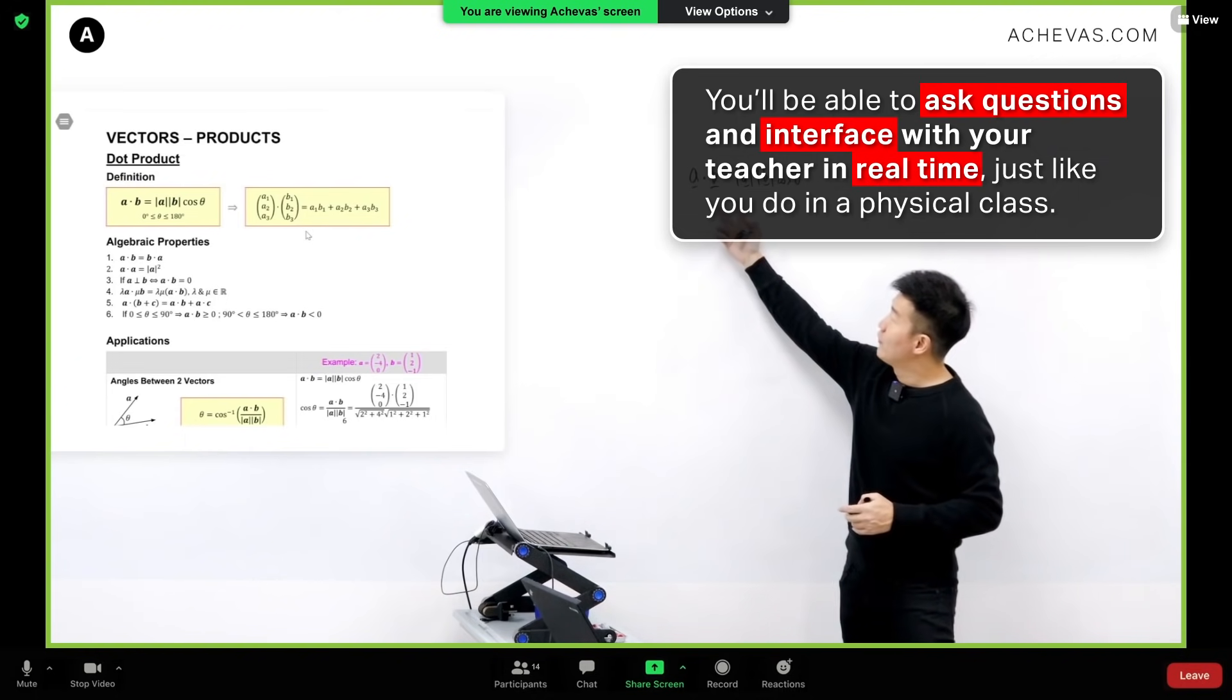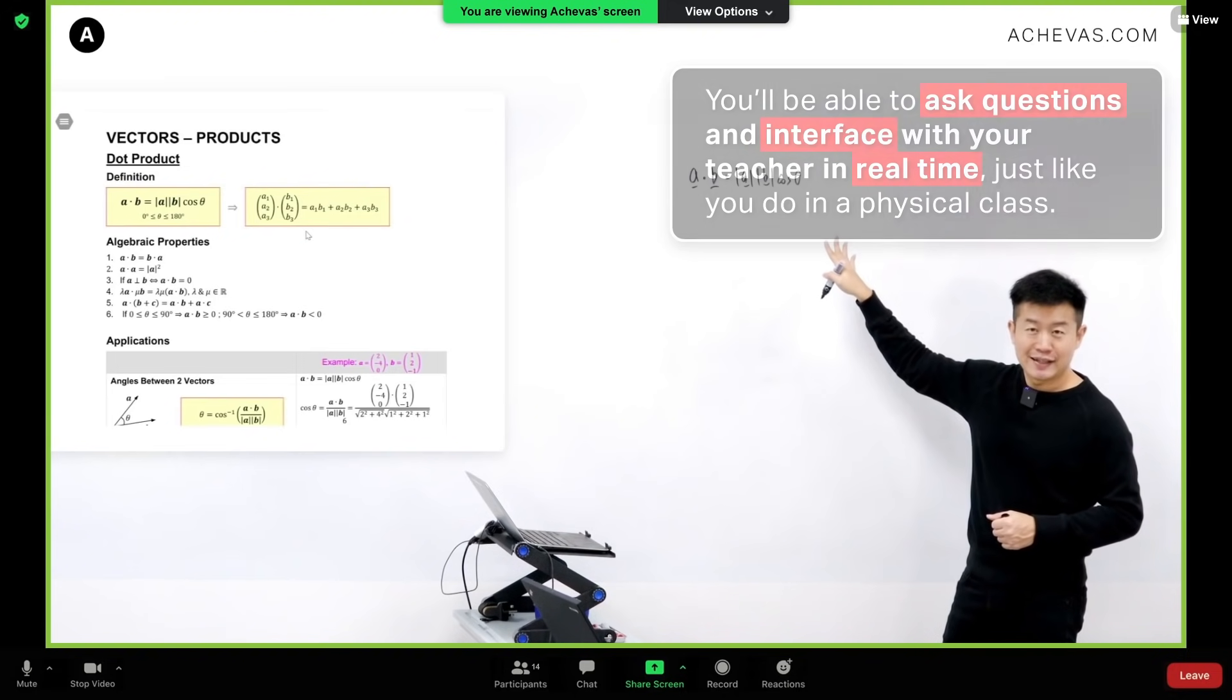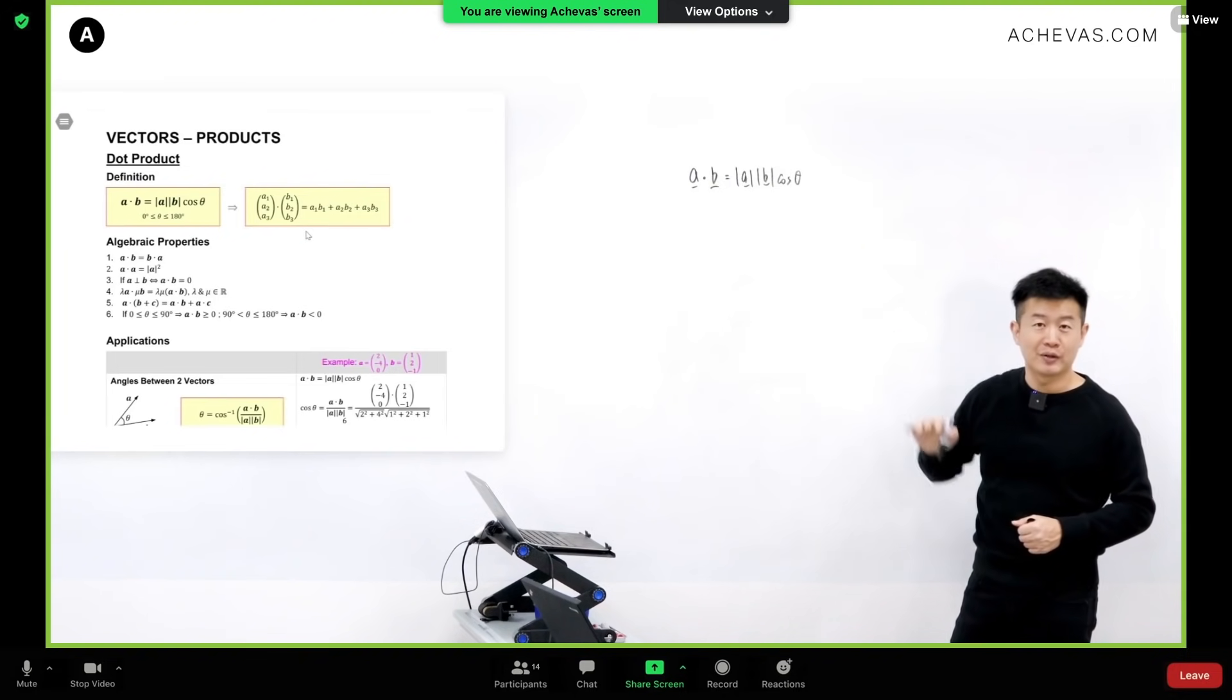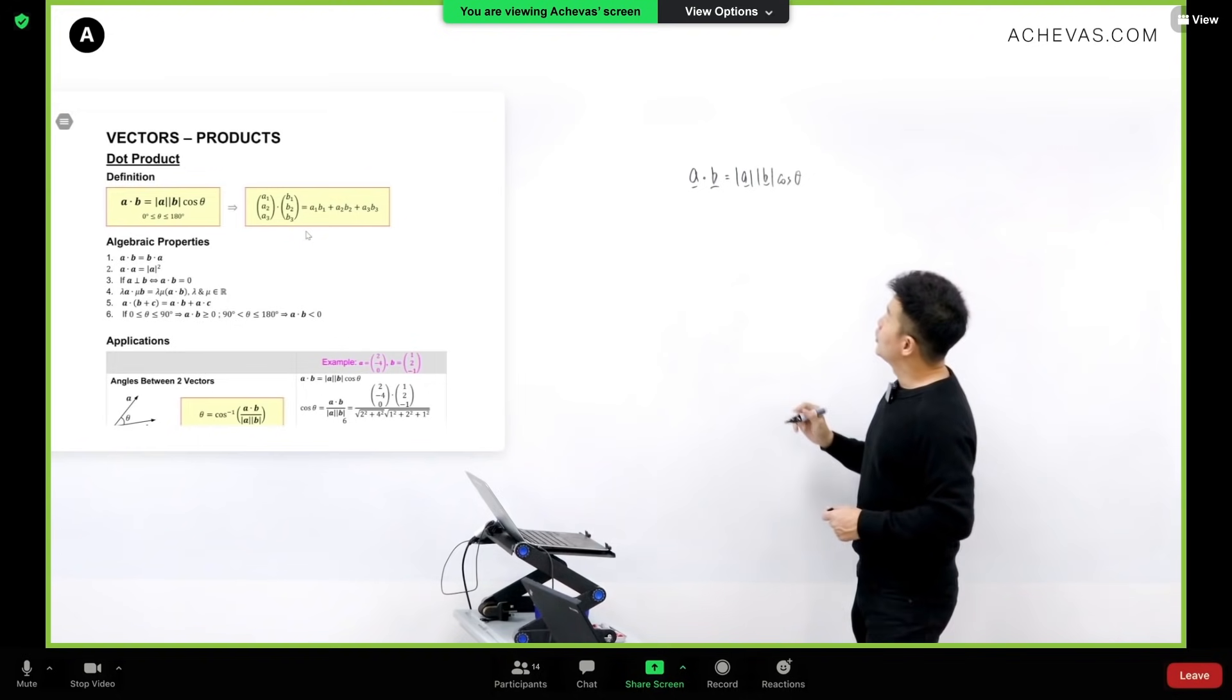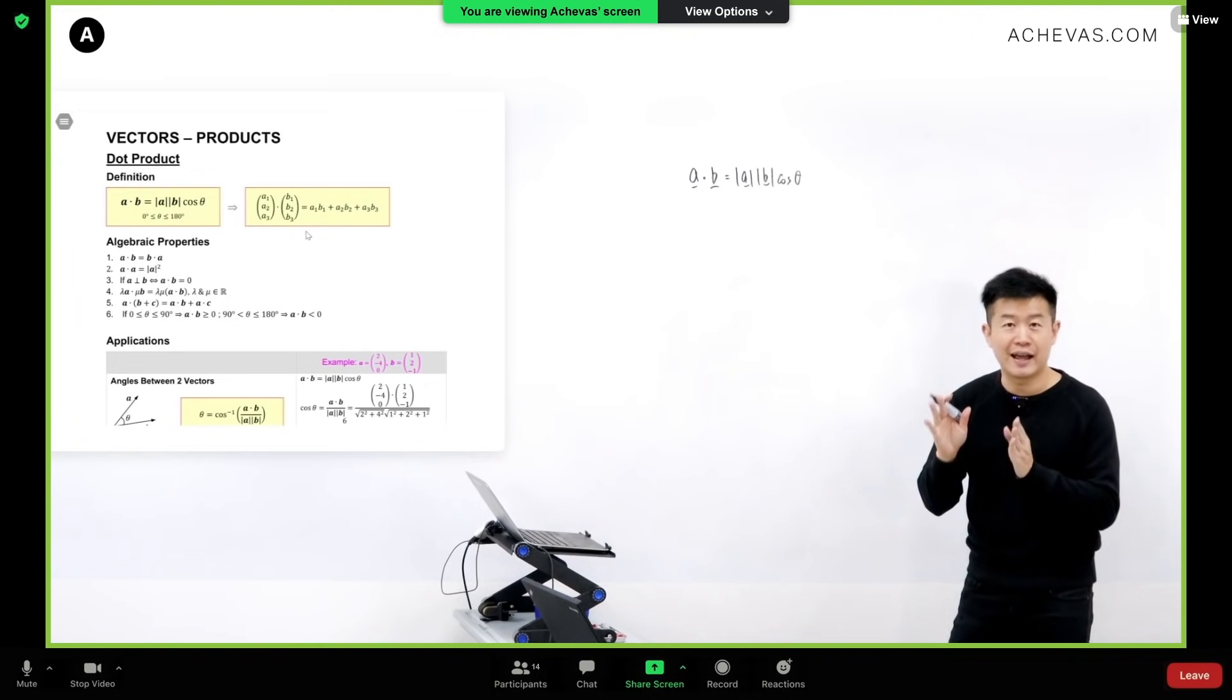So that aside, let's see how we can work and understand very quickly about this dot product. For this angle theta over here, we are defining this angle theta as the angle that is between two vectors a and b.